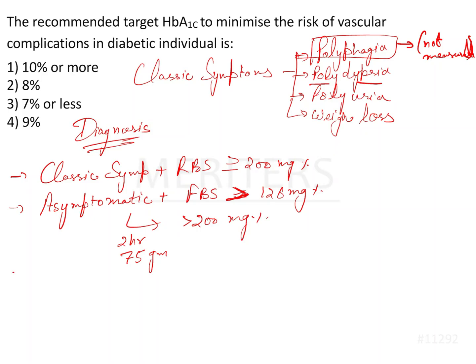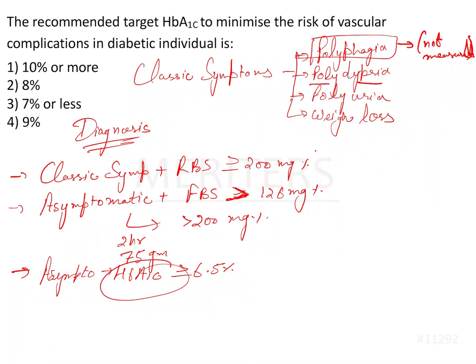If the asymptomatic patient has HbA1c levels more than or equal to 6.5%, you are also going to call the patient diabetic. Out of all these tests, HbA1c is the most reliable and most accurate. If all these options are given in an exam question about the diagnosis of diabetes, you will choose HbA1c because it is the best answer.